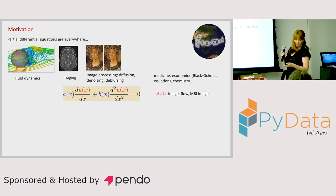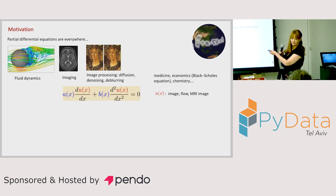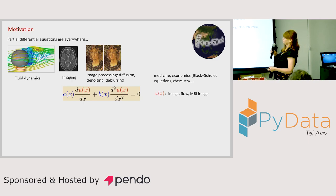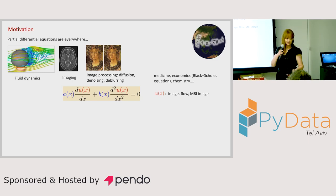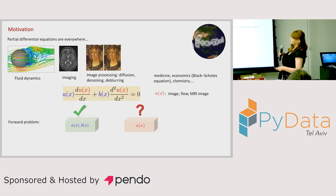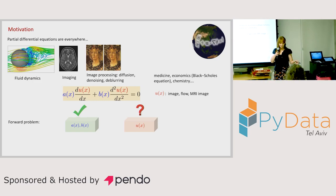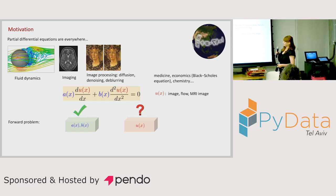The basic structure is: we have some coefficients A and B, and the derivative with some order. For example, we have A·(du/dx) plus B·(second derivative of u with respect to x). Here u is, for example, the image, the flow, the MRI image. We define the forward problem such that A and B — the coefficients, which are not constant practically — are known in advance, and we want to find u(x).